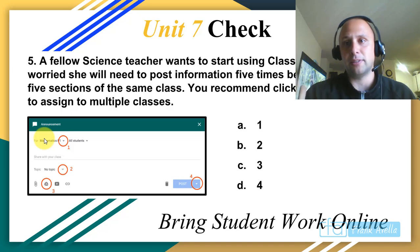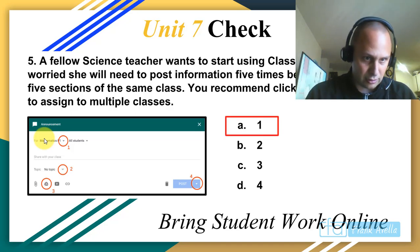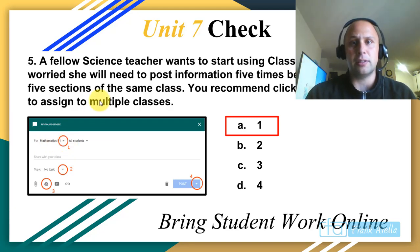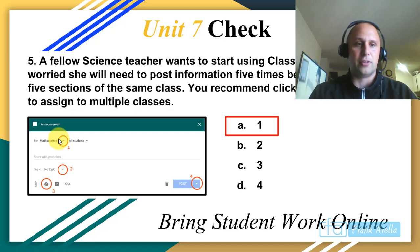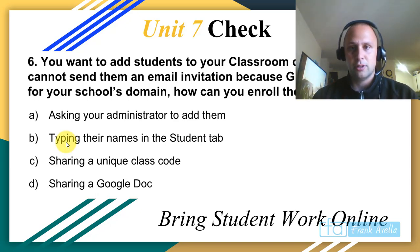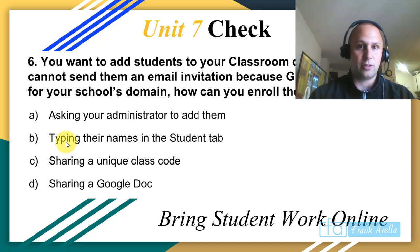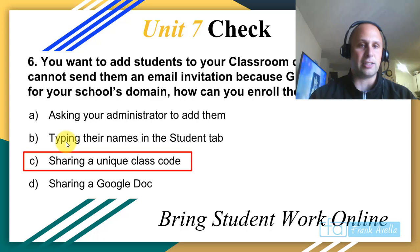A fellow science teacher wants to start using Classroom but is worried she'll need to post information five times because she teaches five sections. Recommendation: when you create an assignment, click the class selector — you'll see it pop open and you can select all five sections at once. If you cannot send an email invitation because Gmail is disabled, enroll students using the class code — it's the easiest way.